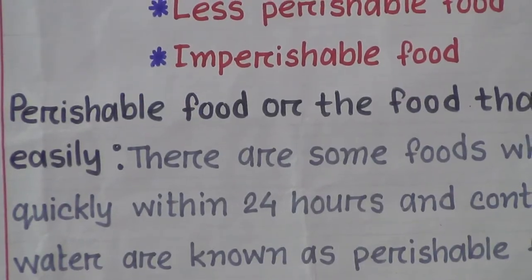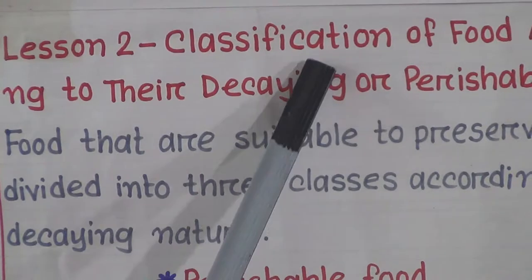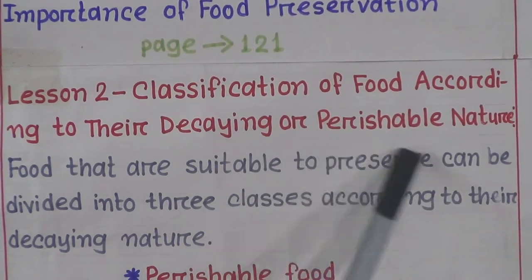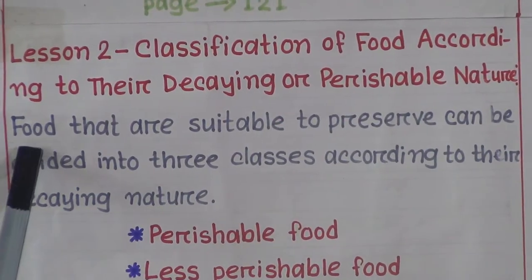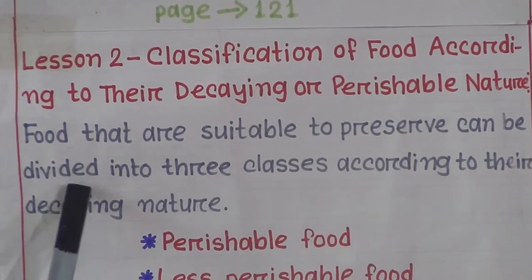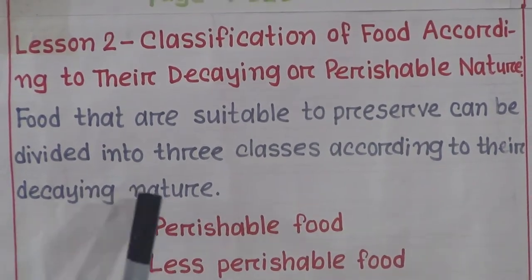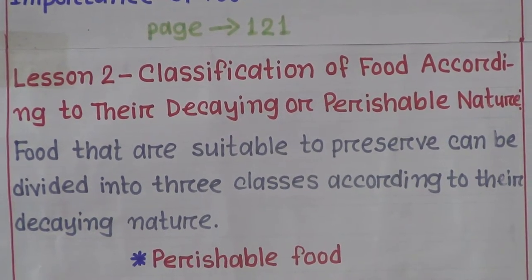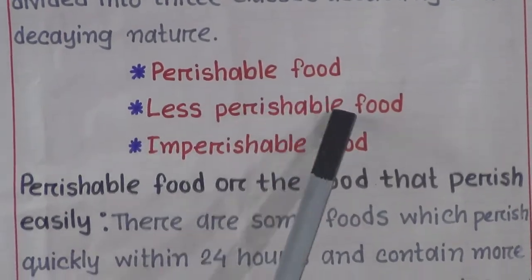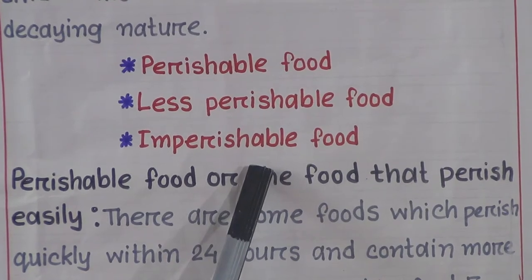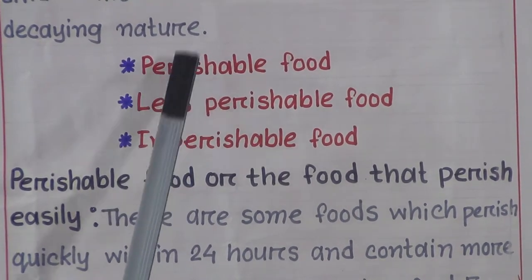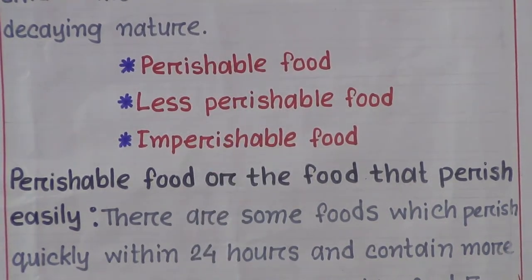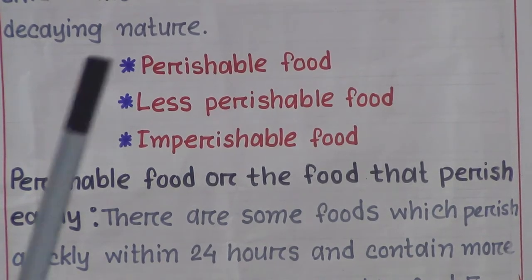Now we'll discuss lesson two: Classification of Food According to Their Decaying or Perishable Nature. Food that is suitable to preserve can be divided into three classes: perishable food, less perishable food, and imperishable food.